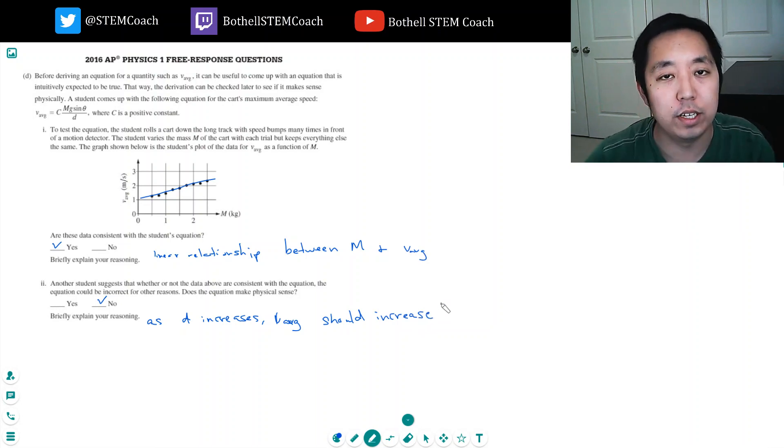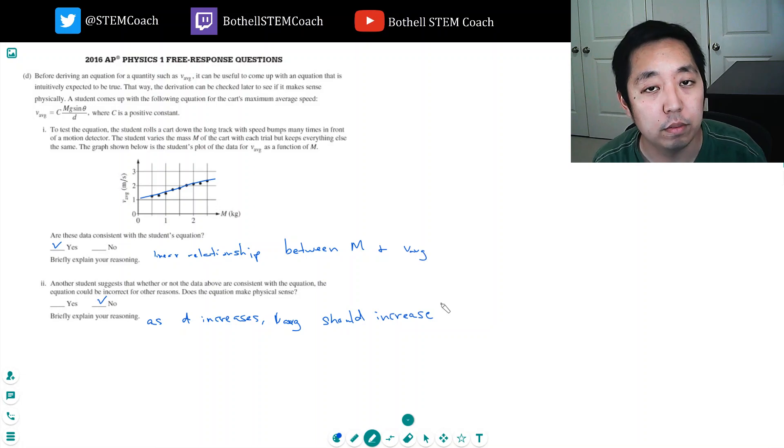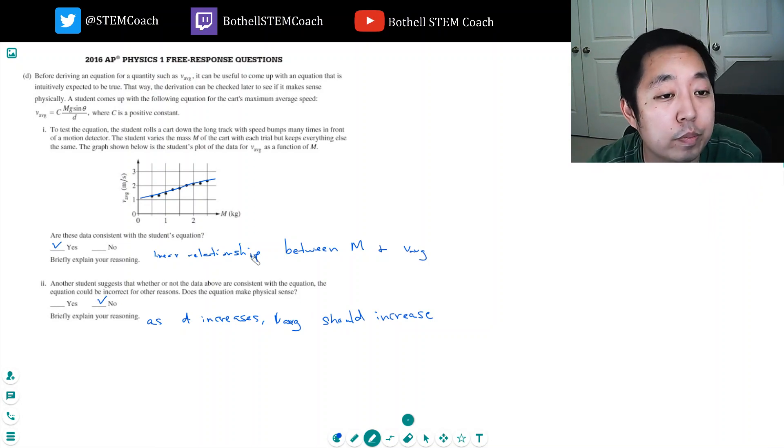Think of it this way. Say d were infinite, say there was just a bump and a bump a mile away, right? Well it's just going to continue accelerating, accelerating, going faster. But it's definitely going to be going much faster over that time. Okay, I think that's all of it.